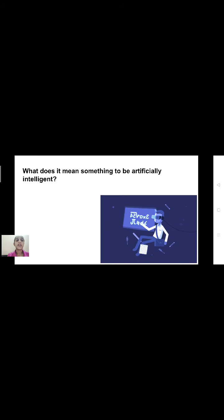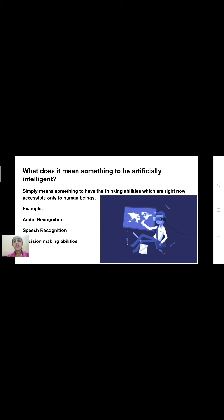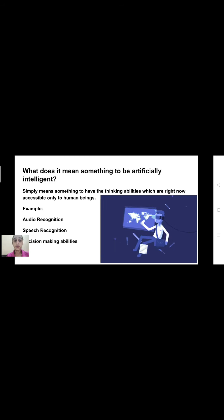What does it mean for something to be artificially intelligent? It simply means something to have the thinking abilities which are right now accessible to human beings only — for example, audio recognition, speech recognition, and decision making abilities. For a computer to understand what you are, understand your feelings, identify the difference between a sheep and a dog, or recognize a specific person's voice — this is what is called artificially intelligent.